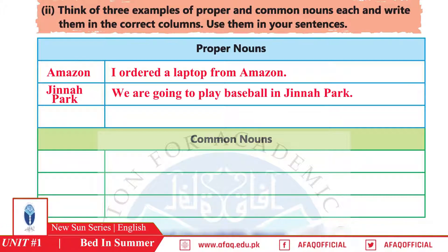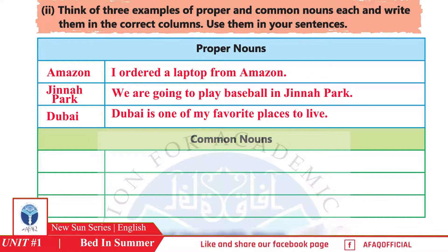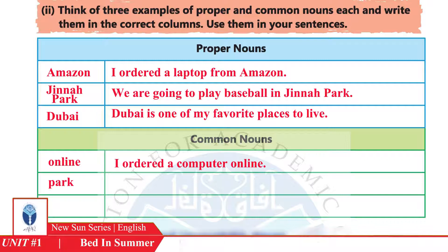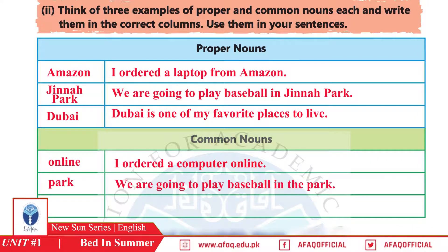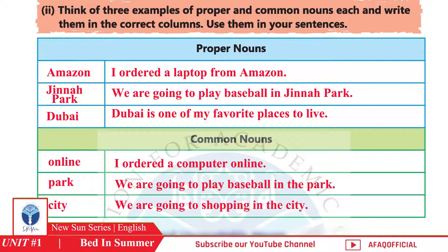The sentence for Jina Park is: 'We are going to play baseball in Jina Park.' Third proper noun is Dubai — sentence: 'Dubai is one of my favorite places to visit.' Now common nouns: first is 'online' — 'I ordered a computer online.' Second is 'park' — 'We are going to play baseball in the park.' Third is 'city' — 'We are going to shopping in the city.'